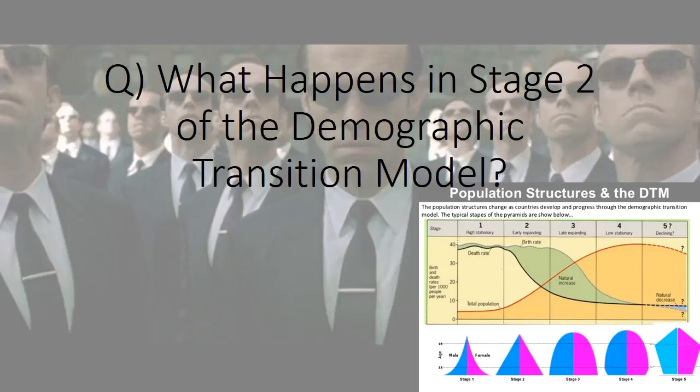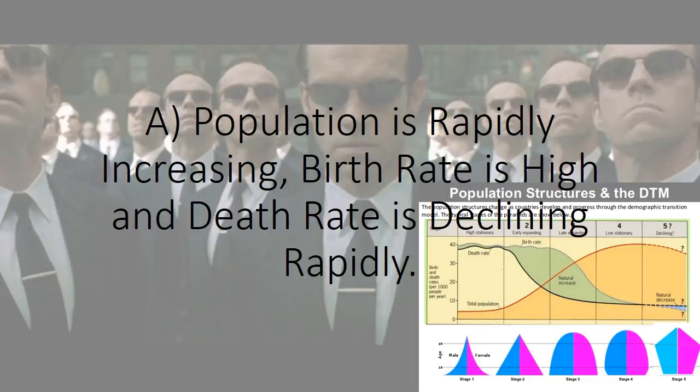What happens in stage two of the demographic transition model? Population is rapidly increasing; birth rate is high and death rate is declining rapidly.